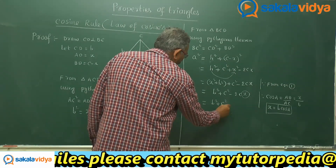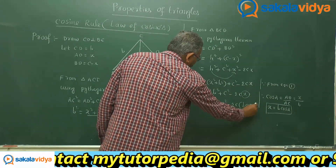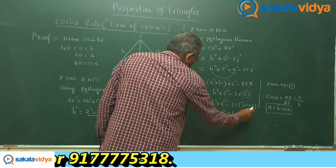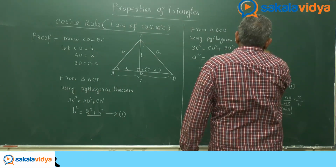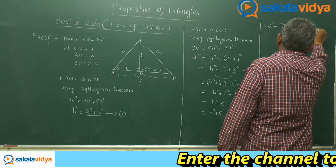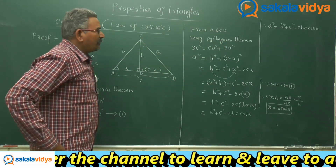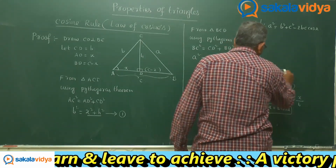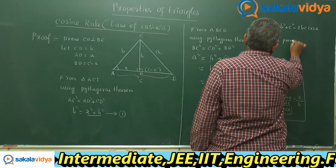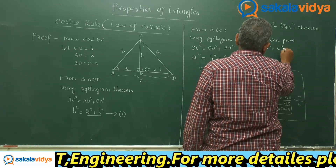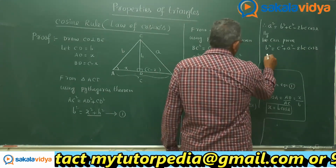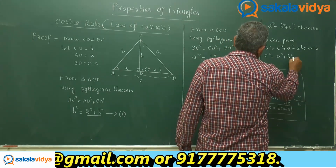Substituting x = b·cos A into the expression: a² = b² + c² − 2c·(b·cos A) = b² + c² − 2bc·cos A. Hence a² = b² + c² − 2bc·cos A is proved. Similarly, we can prove b² = c² + a² − 2ca·cos B and c² = a² + b² − 2ab·cos C.